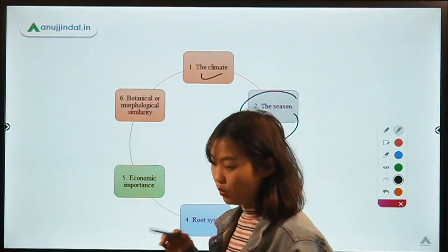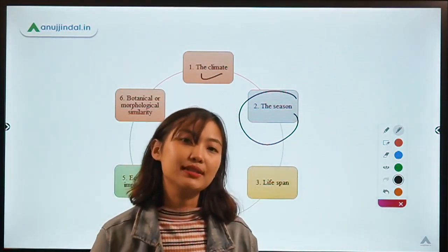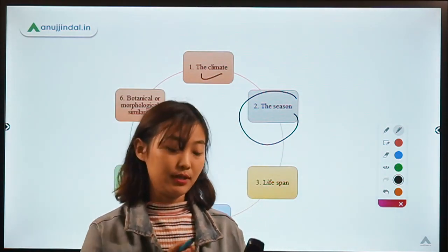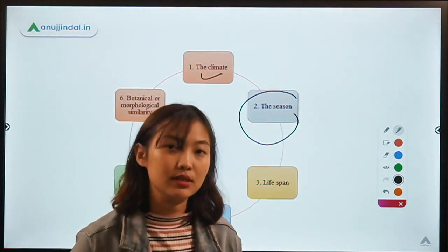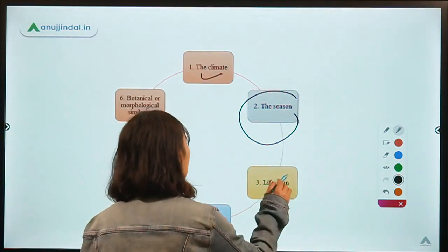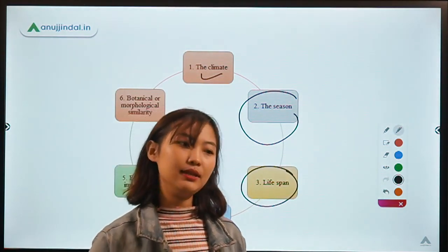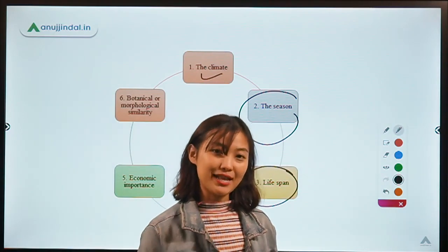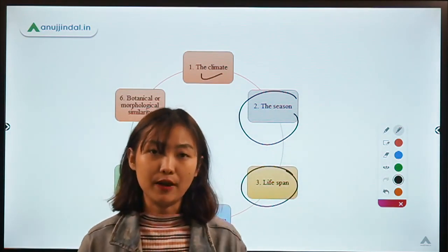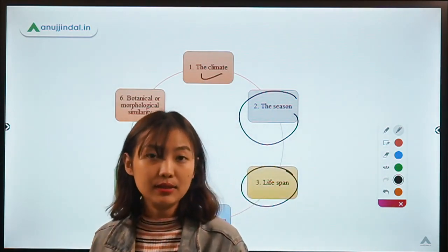The second basis is season — we focus on the time when the crop is grown. We have three seasons: rainy season, summer season, and winter season. The third classification is on lifespan. Just as humans have a lifespan, the same plants also have a lifespan. The lifespan can vary — it can be annual, biennial, or perennial. When we talk about annuals, they mostly complete their whole life cycle — both vegetative and reproductive stages — in one season, which is roughly about six months.